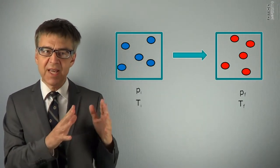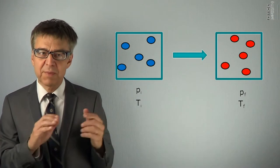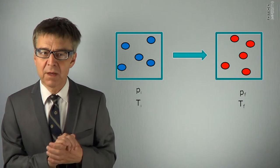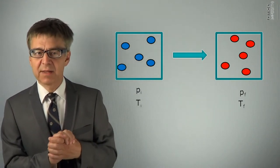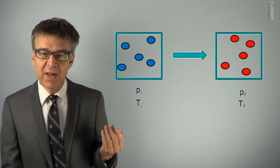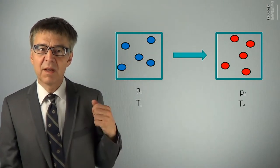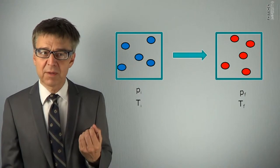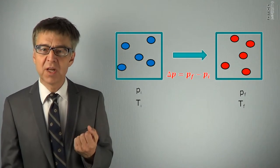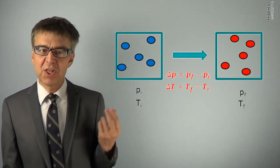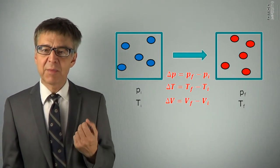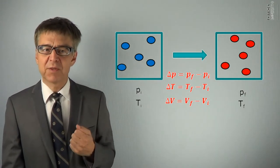To describe this state change in numbers, we need to specify the changes of the state variables of temperature and pressure. This is usually expressed by a delta in thermodynamics. Delta V is the final value of the state variable minus the initial value of the state variable. Delta P equals P final minus P initial. Delta T equals T final minus T initial. Delta V would be equal to zero in this process.